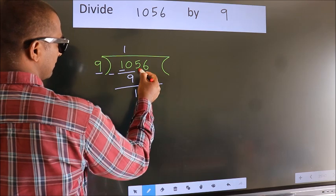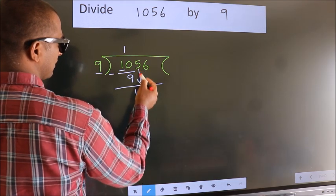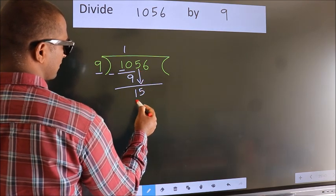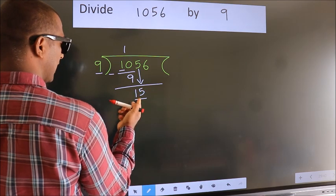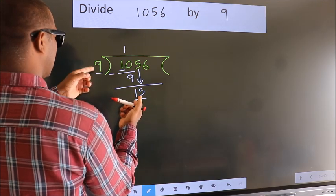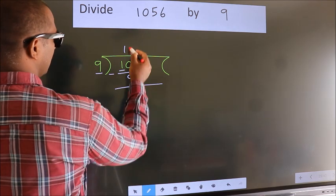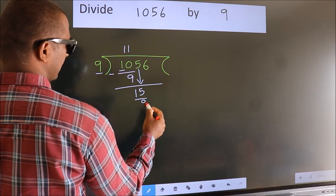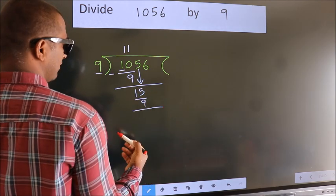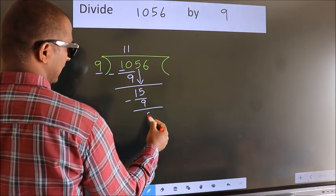After this, bring down the next number. So, 5 down. So, 15. A number close to 15 in the 9 table is 9 ones, which is 9. Now we subtract. We get 6.